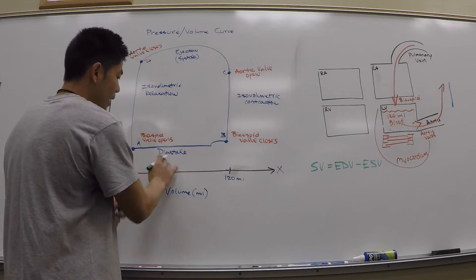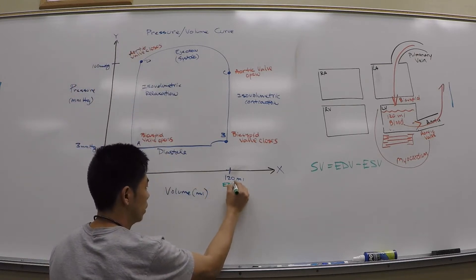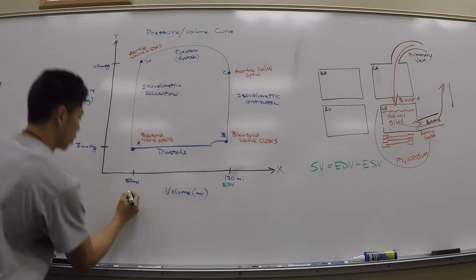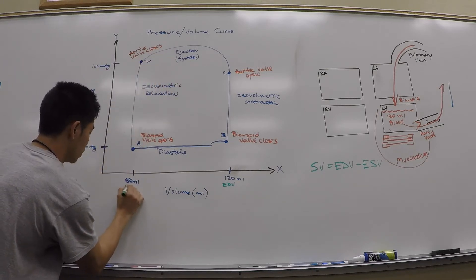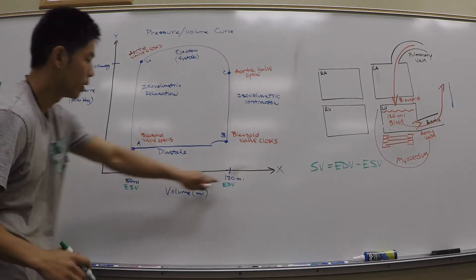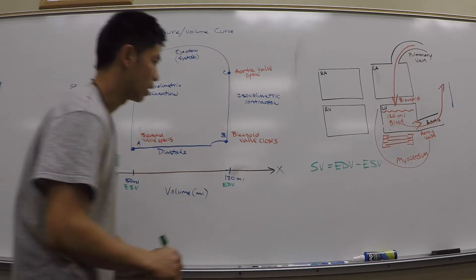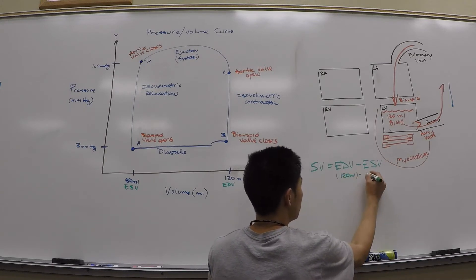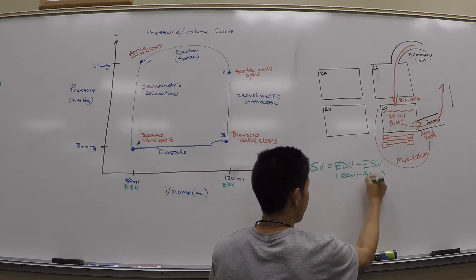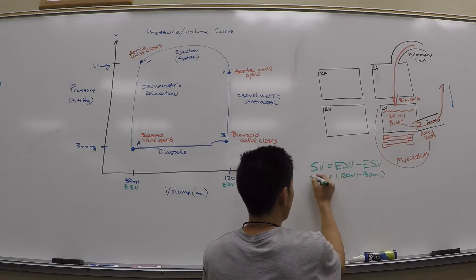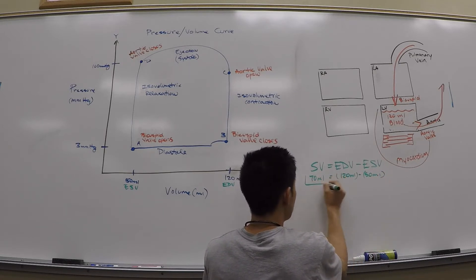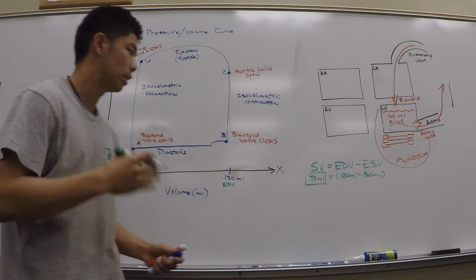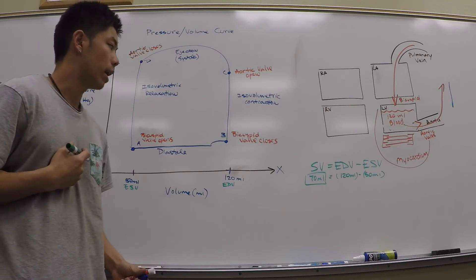At the end of diastole we're going to be at 120 milliliters, and at the end of systole we're going to be at 50 milliliters of blood. So 50 milliliters is our end-systolic volume and 120 milliliters is our end-diastolic volume. Plugging that in: 120 minus 50 gives us a stroke volume of 70 milliliters — about 70 mL for a healthy human being pumped every heartbeat.